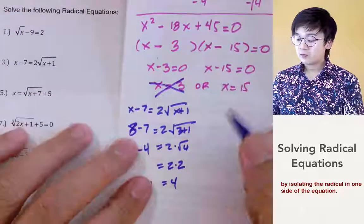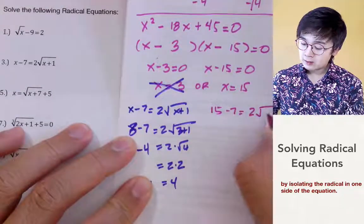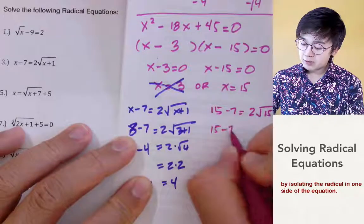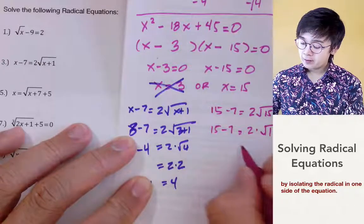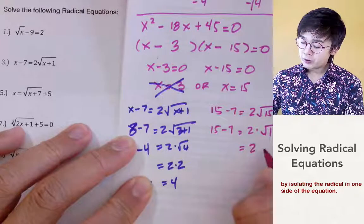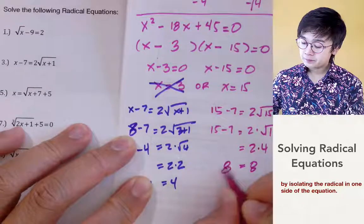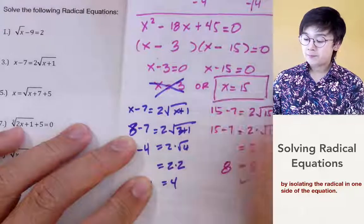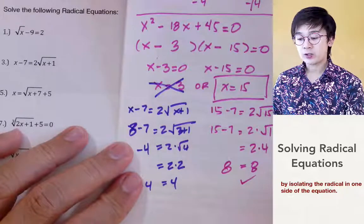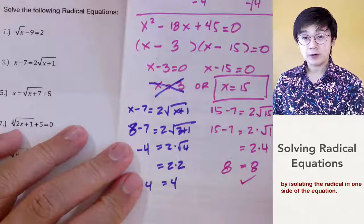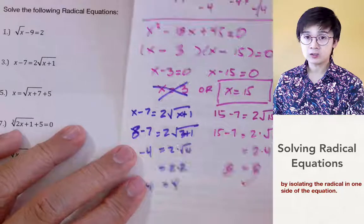Now let's verify x equal to 15. We have 15 minus 7 equals 2 times square root of 15 plus 1, so 8 equals 2 times square root of 16 equals 2 times 4 equals 8. Since 15 minus 7 equals 8, x equal to 15 is the solution of our radical equation. This shows that when working with radical equations and getting two answers, always verify which ones are valid solutions.